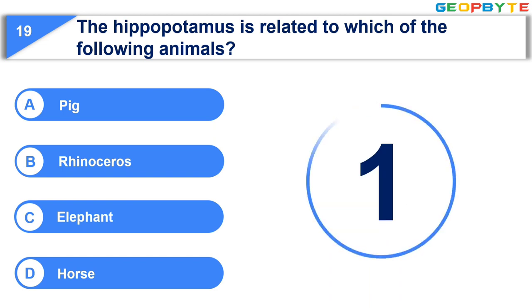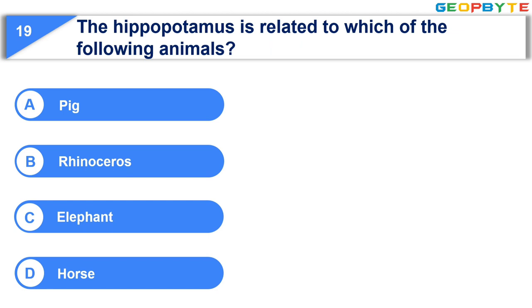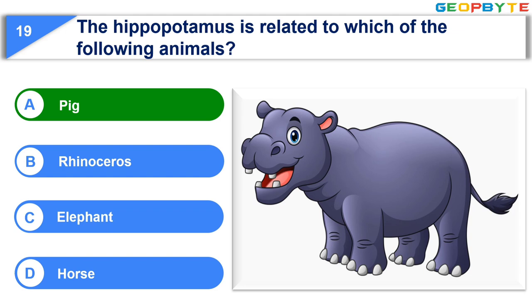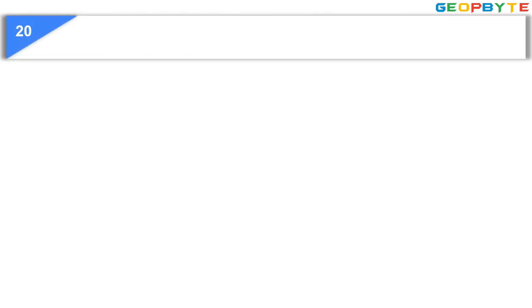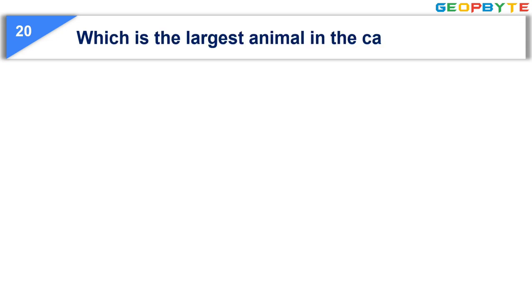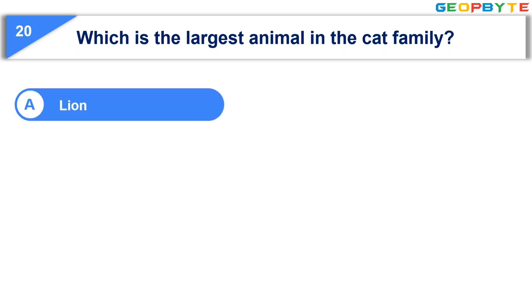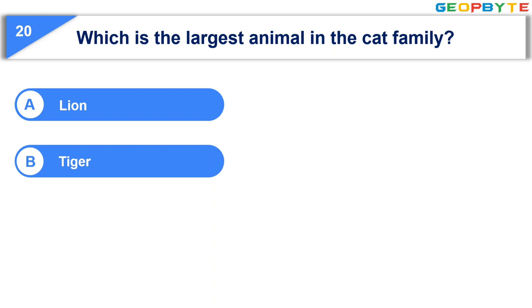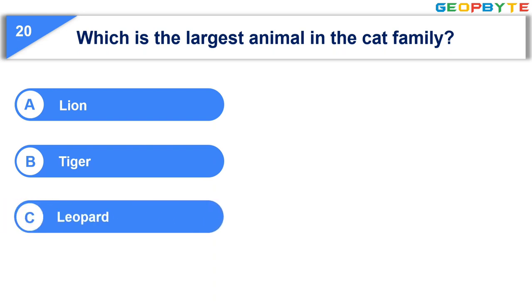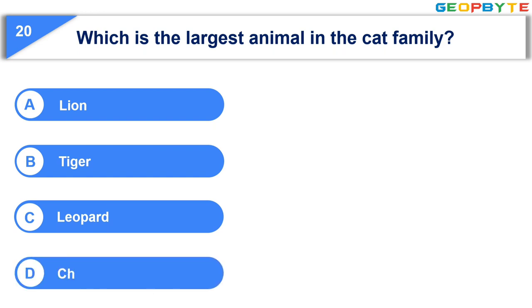Your time is up and the correct answer is Option A: Pig. The 20th question is: Which is the largest animal in the cat family? Option A: Lion. Option B: Tiger. Option C: Leopard. Option D: Cheetah. Your time starts now.